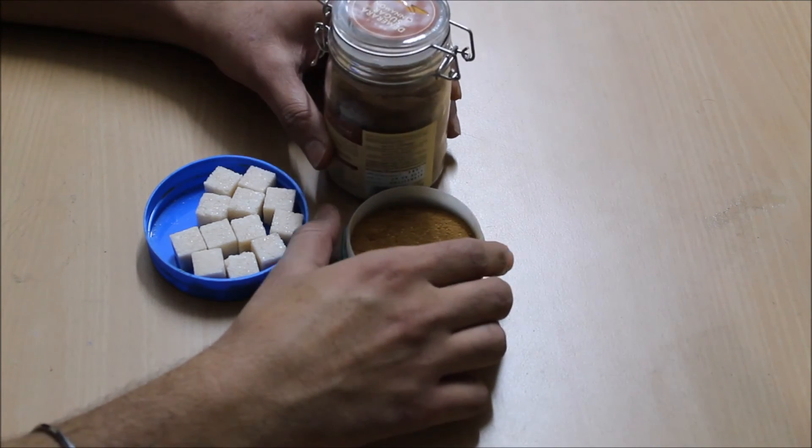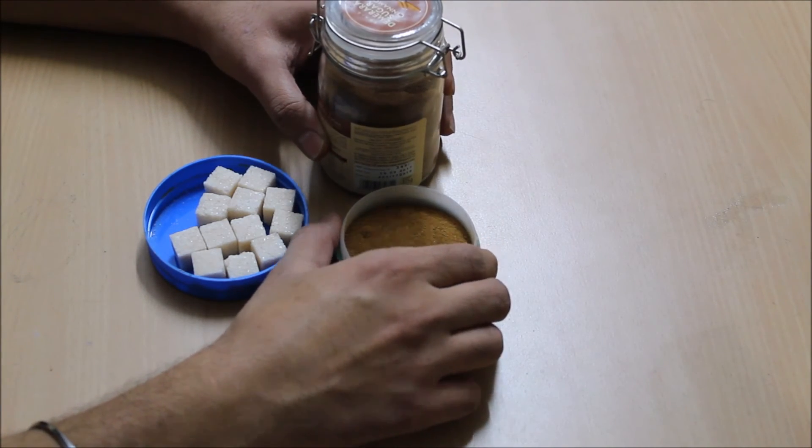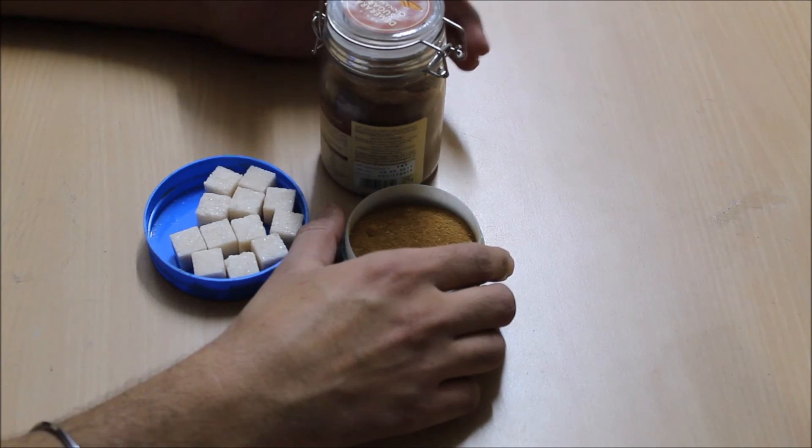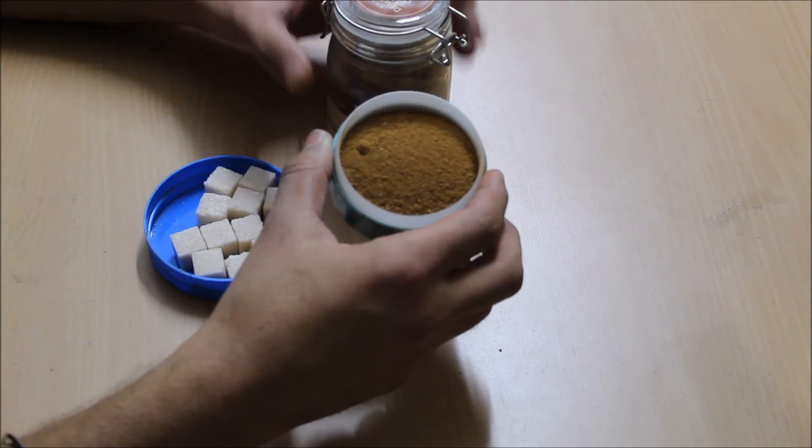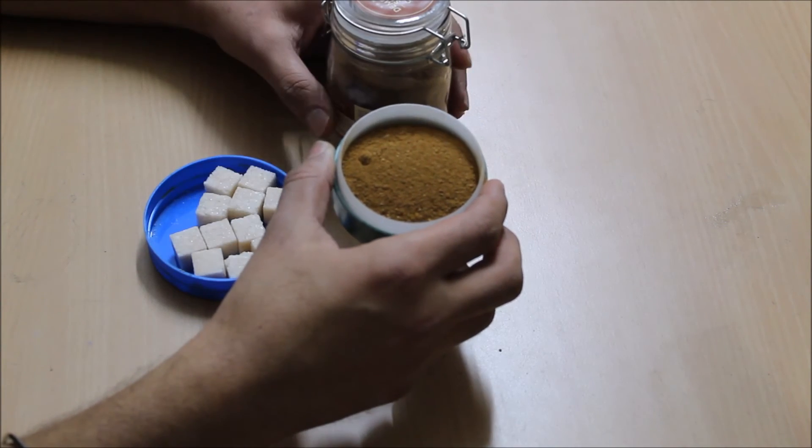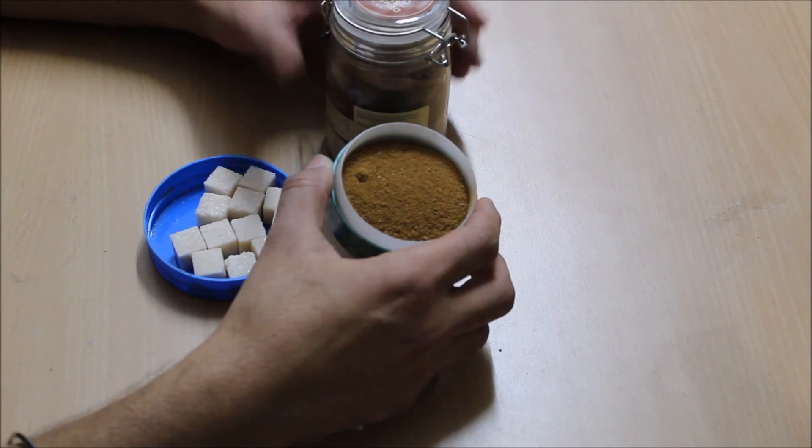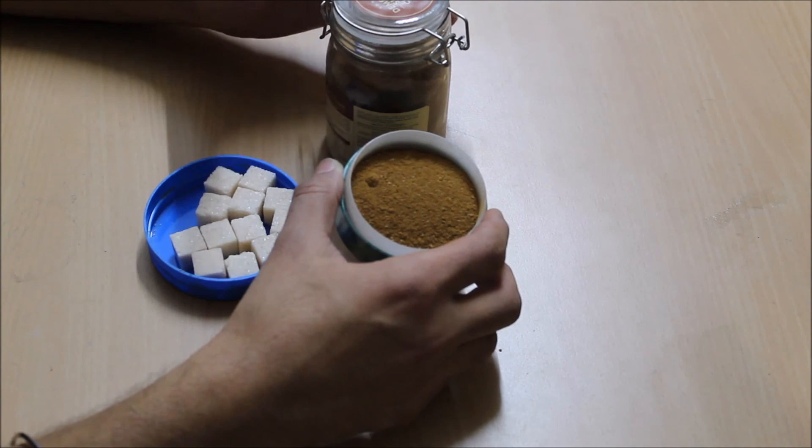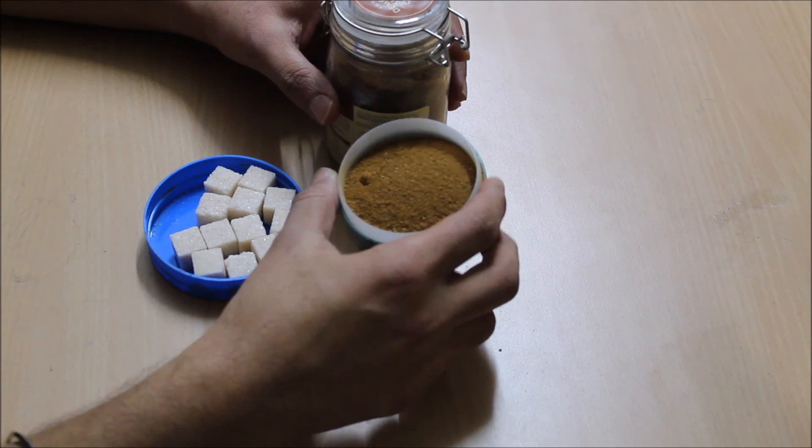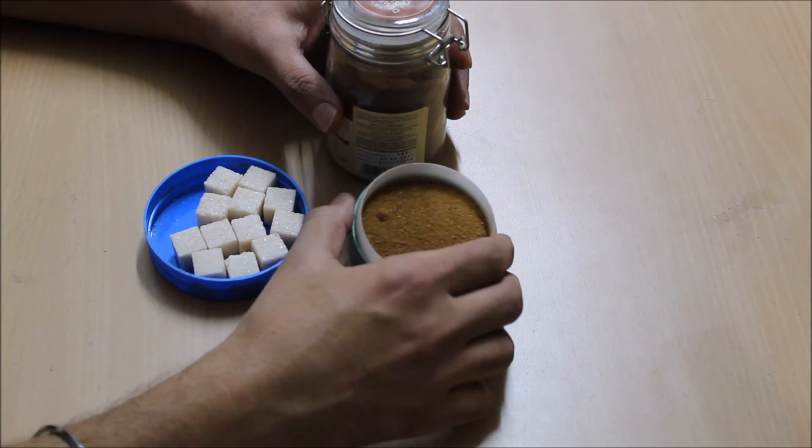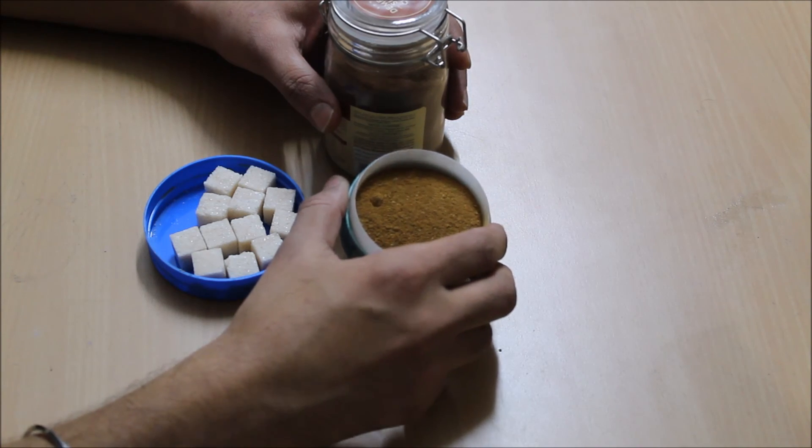These cinnamon products are easily available at any general store, and you can make this powder after buying the bark of the cinnamon tree. You can grind it and make it in a powdery form. The taste is slightly bad, but if you want to get the benefits, you have to take it one teaspoon before going to bed. Thank you guys.